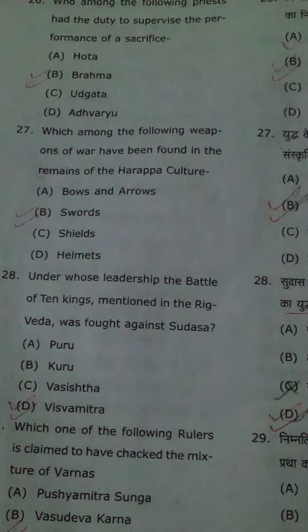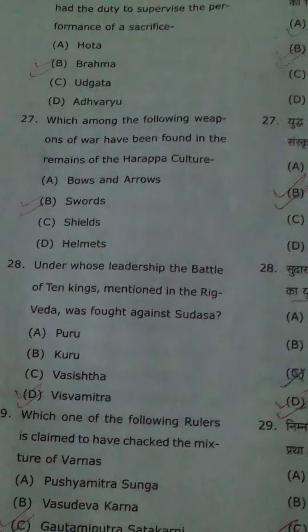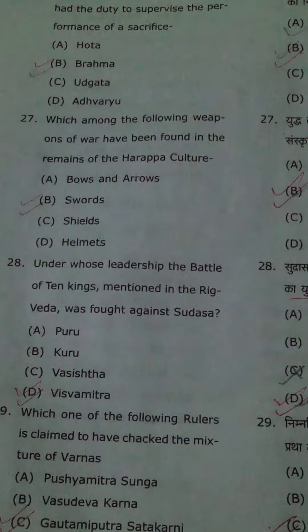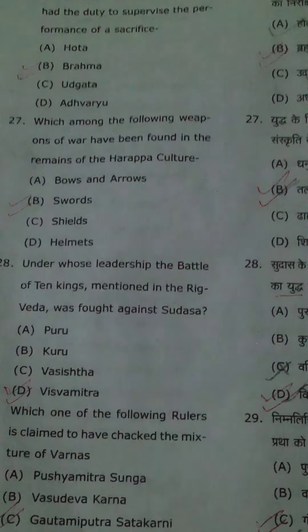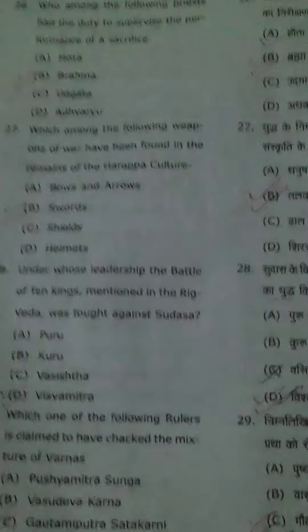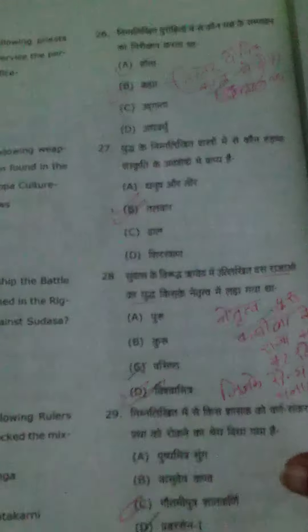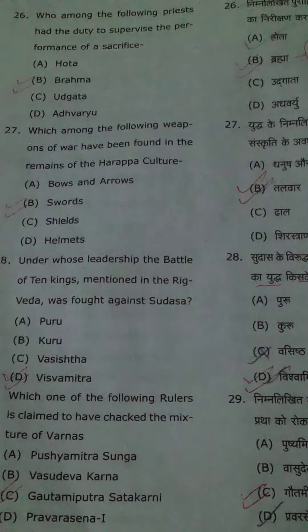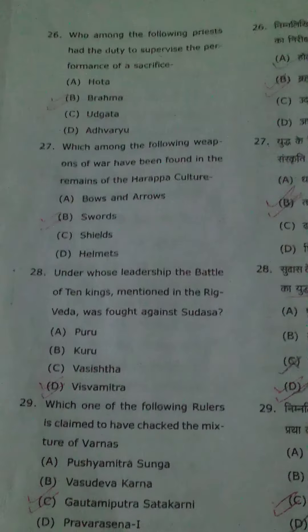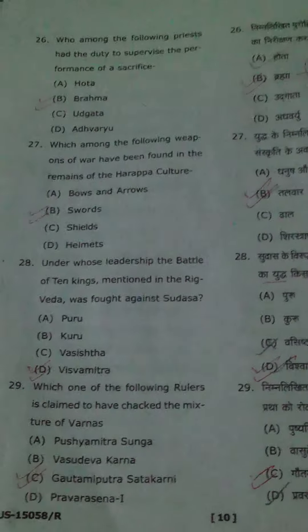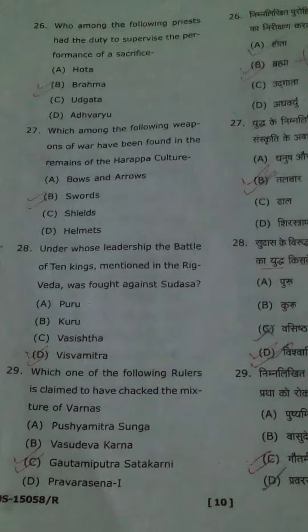Which among the following weapons of war have been found in the remains of Harappan culture? The right option is not swords — it is bows and arrows.